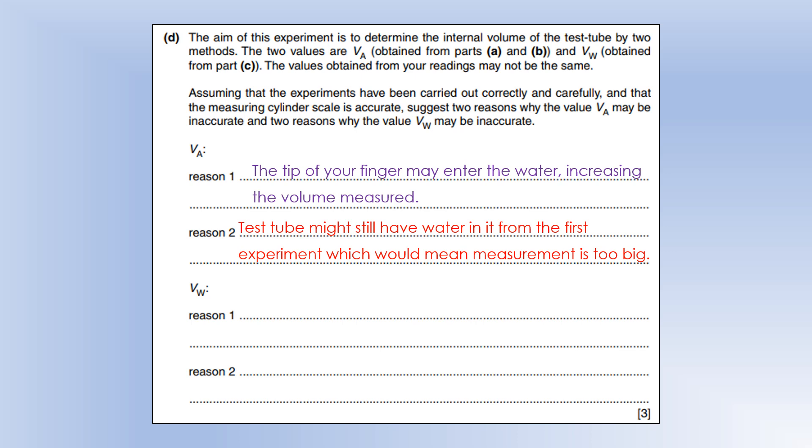We might have some water in the test tube from the first experiment because the first thing we did was fill the test tube with water and then turned it upside down and pushed it full of air. There might have still been some water in it from the first one, so we're not actually going to get the volume of air inside the test tube - we get the volume of air plus the volume of water.